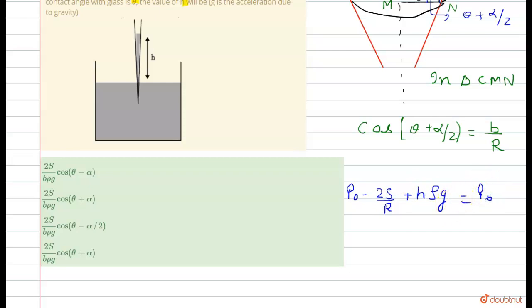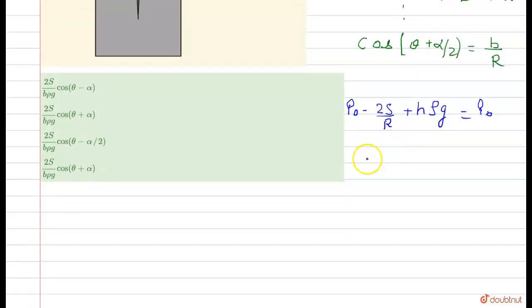From this we can easily calculate the value of h. h rho g is equals to 2s divided by r. Now from here we can easily calculate the value of h.